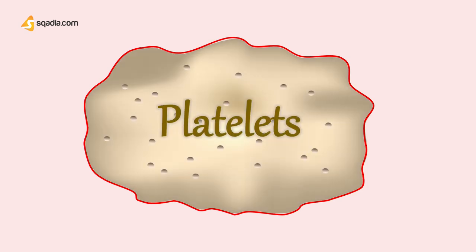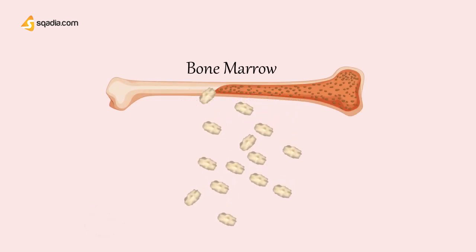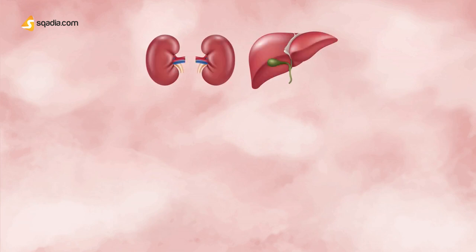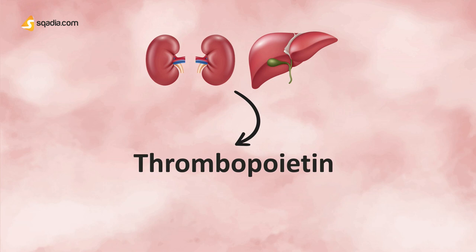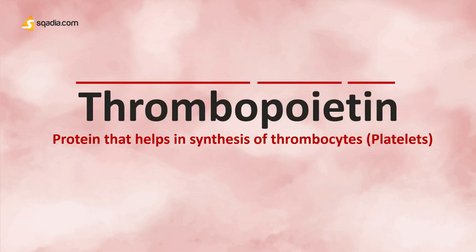Starting off with the platelets: these are blood cells in the plasma that stop bleeding by sticking together to form a clot. They are also known as thrombocytes. They are formed in the bone marrow, which is the soft spongy tissue inside the bone cavities. This formation of platelets is termed thrombopoiesis, and it is regulated by a protein hormone secreted by the liver and kidney known as thrombopoietin. Breaking down the word: thrombo means thrombocytes, poi means synthesis, and tin refers to protein — so it means a protein that helps in the synthesis of thrombocytes or platelets. It is also abbreviated as TPO.